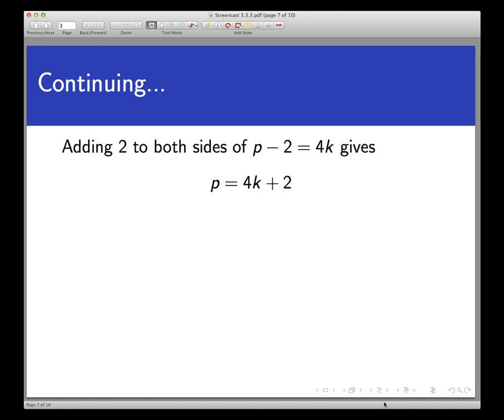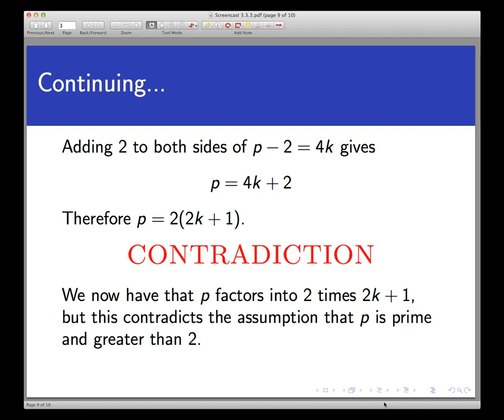You can clearly factor out a 2 from the terms on the right. And here is our contradiction. What we have now is a prime number that's been factored into two factors, a 2 and a 2k plus 1.